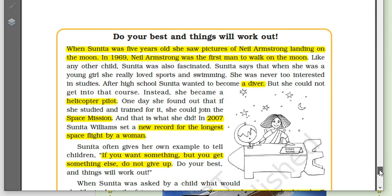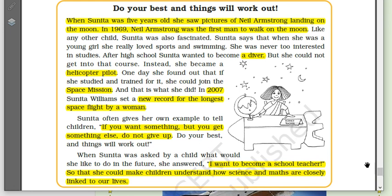The most amazing part of this lesson is what Sunita Williams has told about herself. When Sunita was five years old, she saw pictures of Neil Armstrong landing on the moon. In 1969, Neil Armstrong was the first man to walk on the moon. Like any other child, Sunita was fascinated. She loved sports and swimming and was never too interested in studies. After high school, she wanted to become a diver but could not get into that course, so instead she became a helicopter pilot. One day she found out that if she studied and trained, she could join the space mission — and that is what she did.